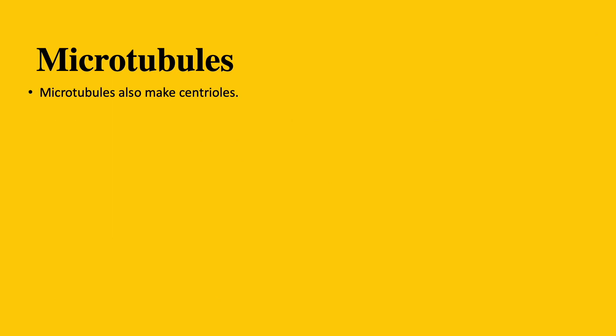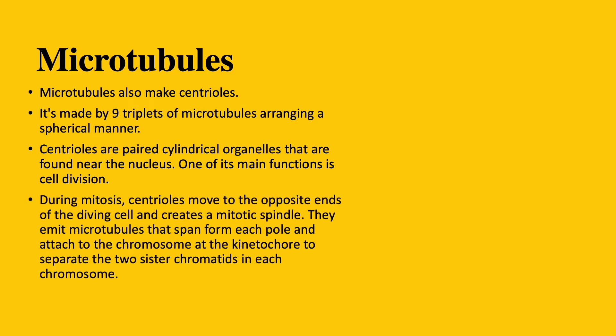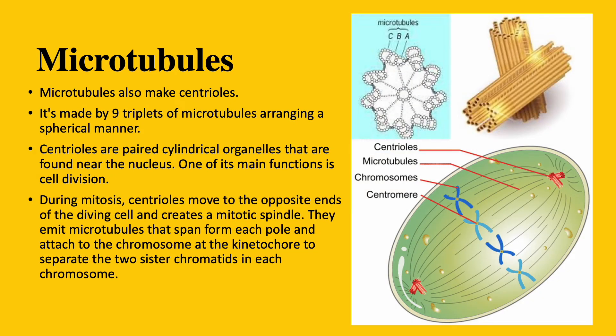Now let's talk about the third function of microtubules. Microtubules also make centrioles. Centrioles are made of 9 triplet microtubules arranged in a spherical manner. They are paired, cylindrical organelles that are found near the nucleus. During mitosis, centrioles move to the opposite ends of the dividing cell and create a mitotic spindle. They emit microtubules that span from each pole and attach to the chromosomes arranged at the center of the cell at a place called kinetochores. Once the microtubules attach to the kinetochores, they separate the two sister chromatids found in each chromosome.